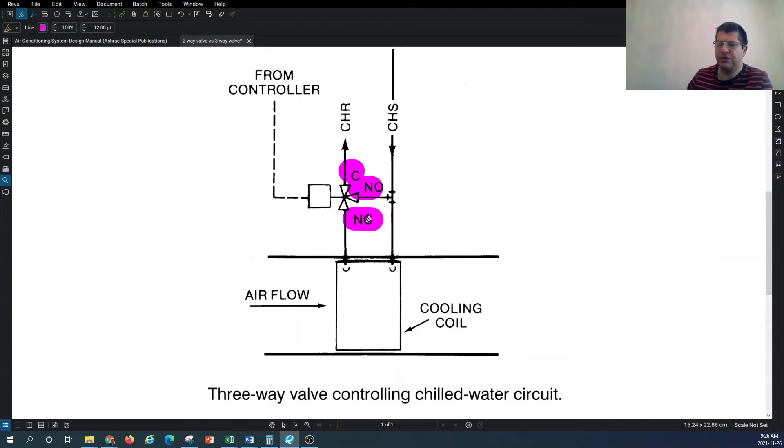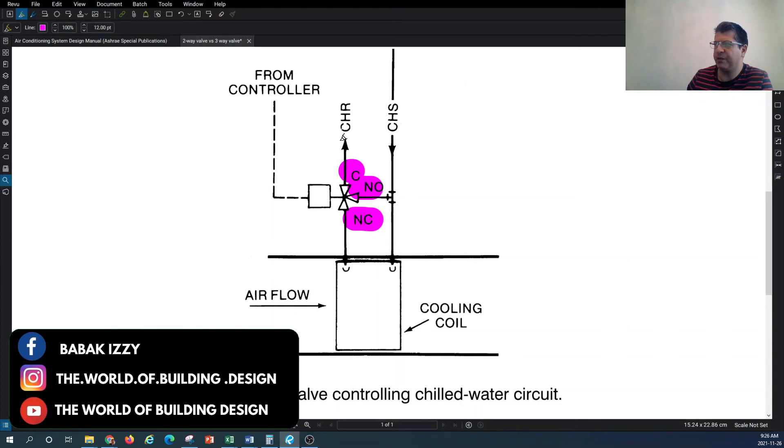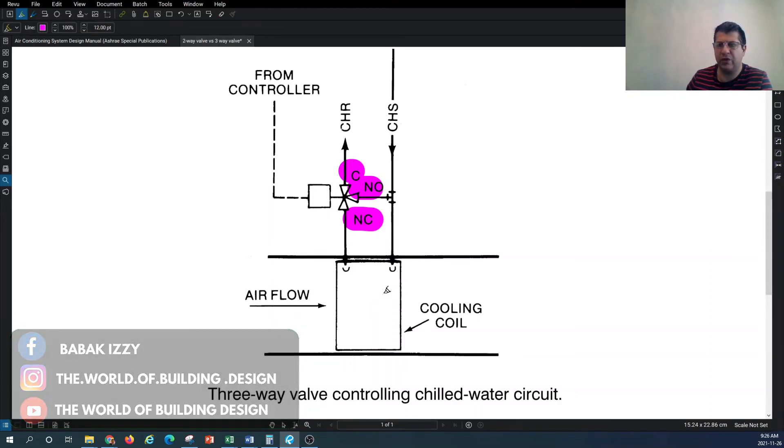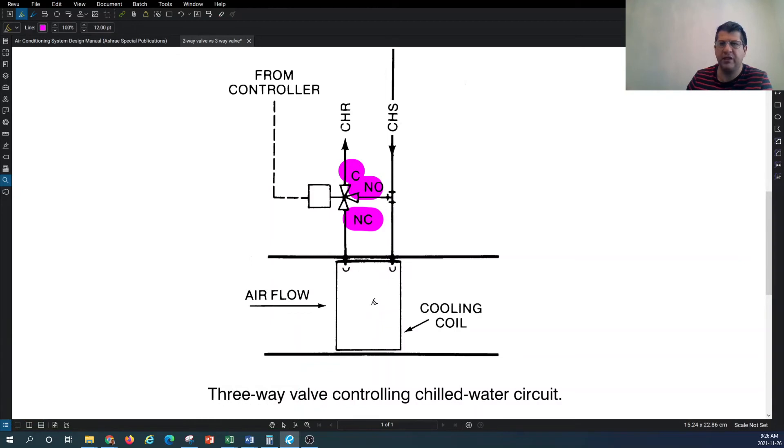If your normally closed valve position on the return side is open 20 percent, it means that the diverting portion of the valve is 80 percent open. This means 80 percent of the chilled water coming through this line is diverted back to the system, and only 20 percent comes into your heating coil and circulates into your heating or cooling coil and provides the heat transfer effect.